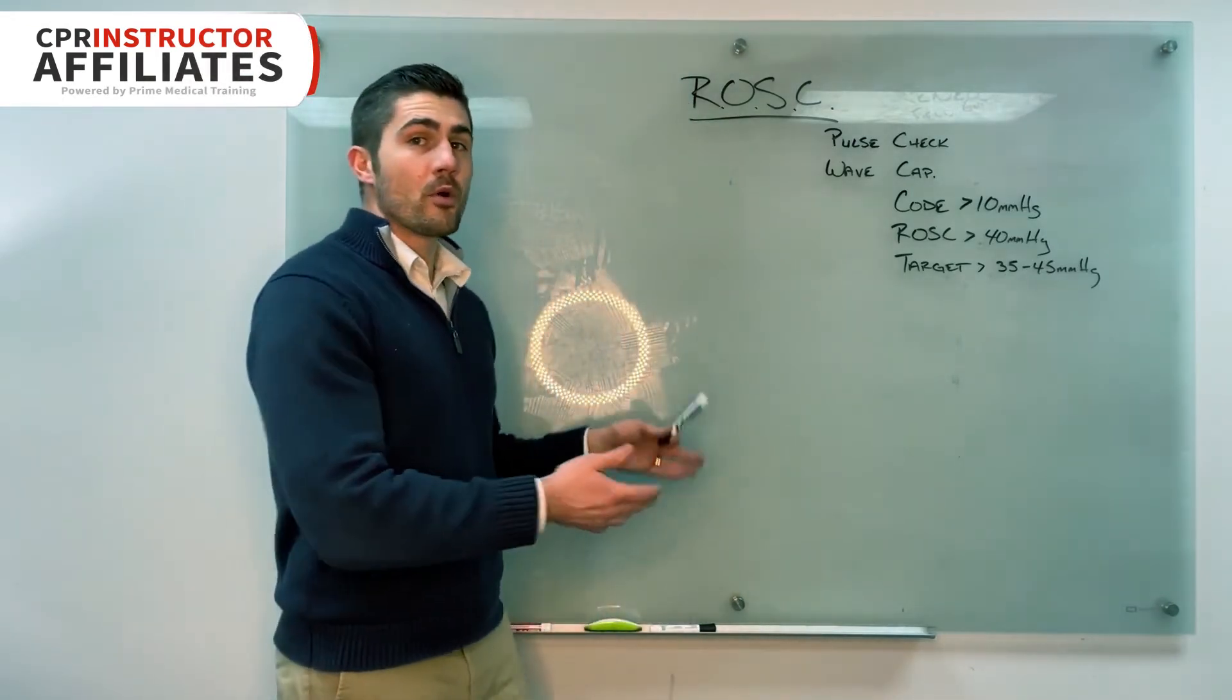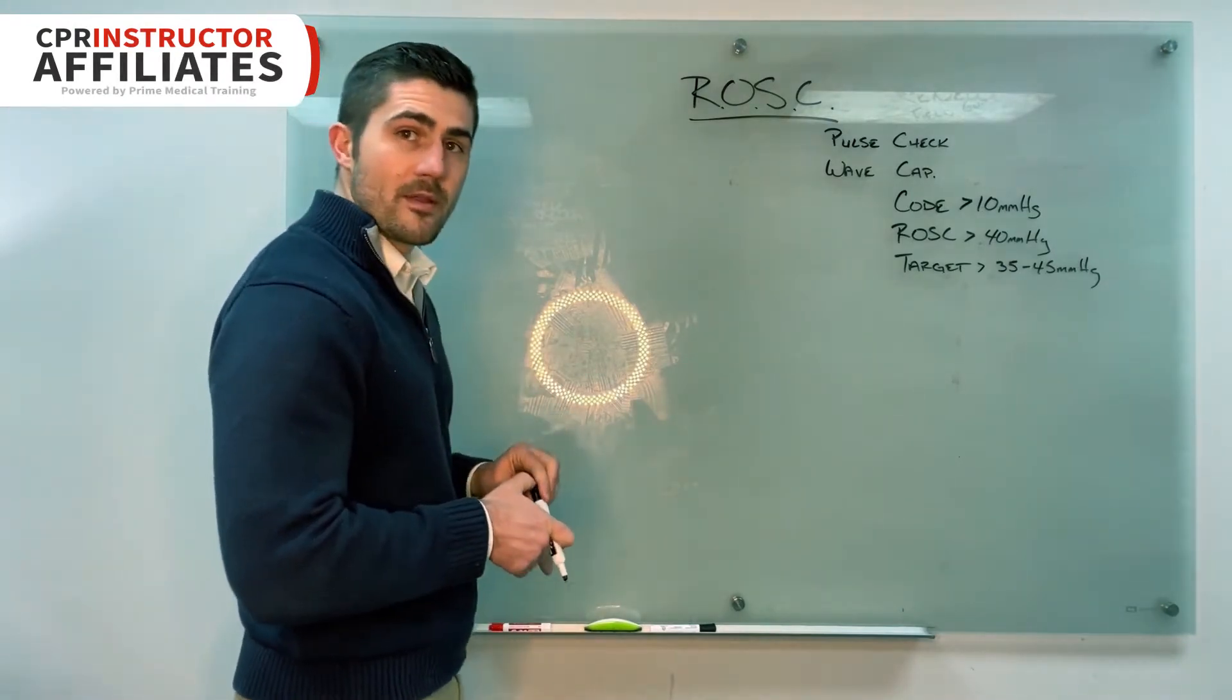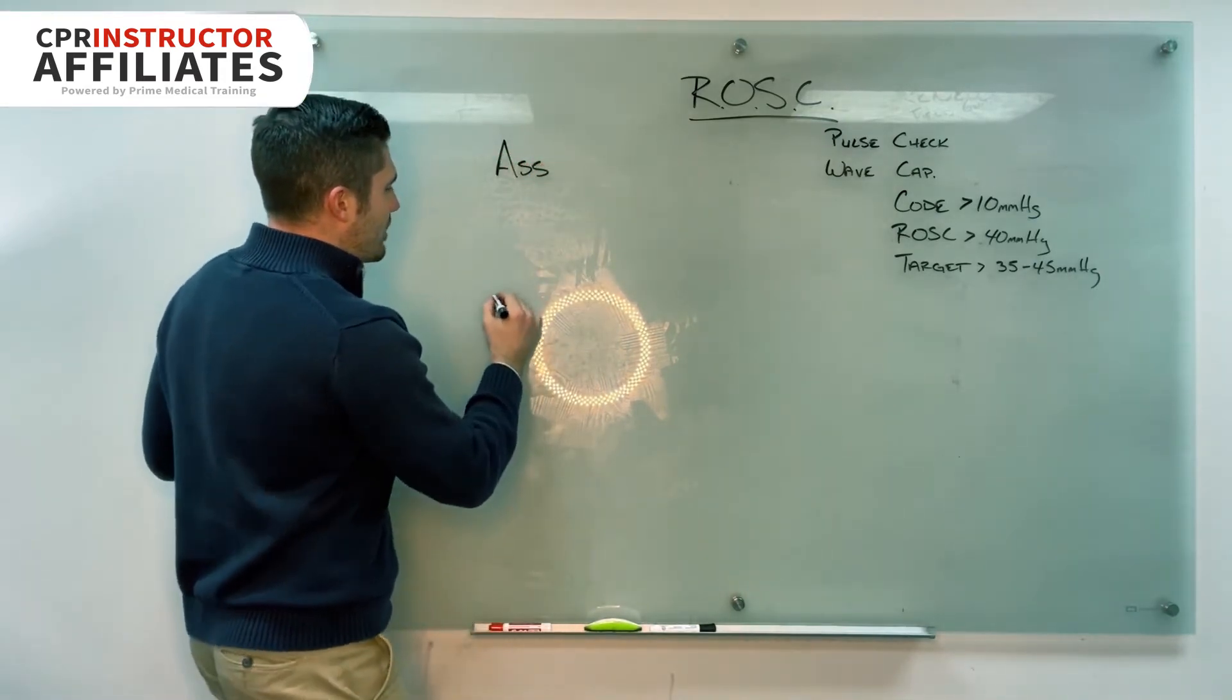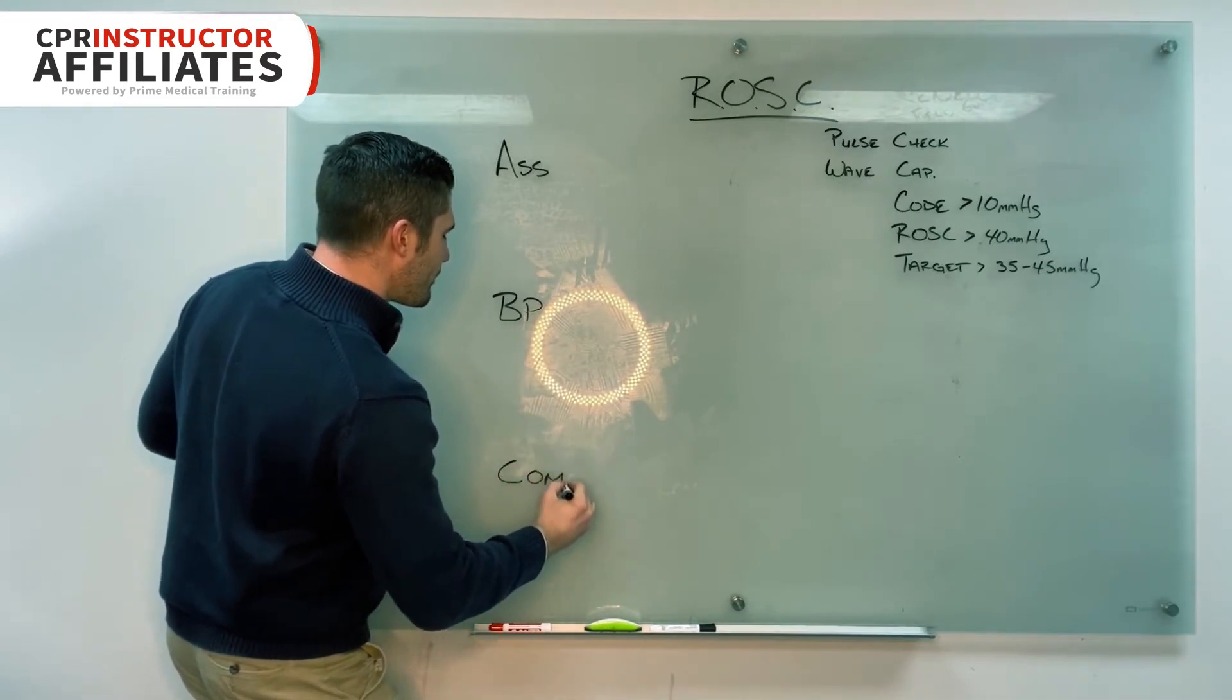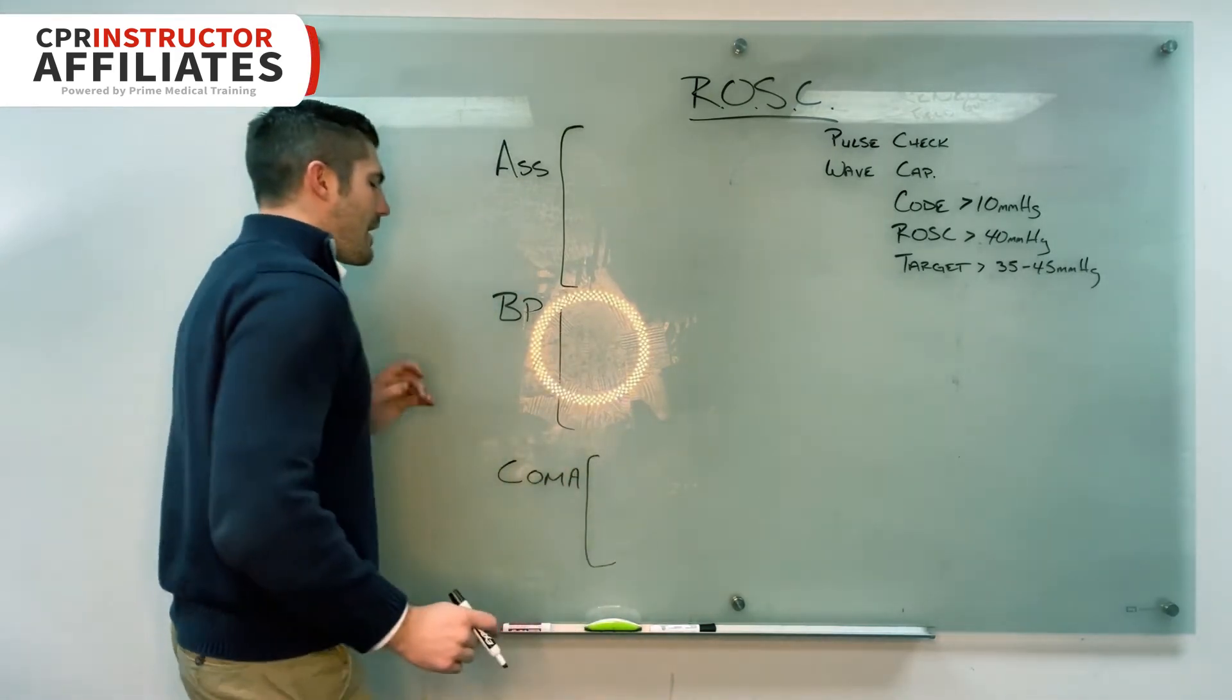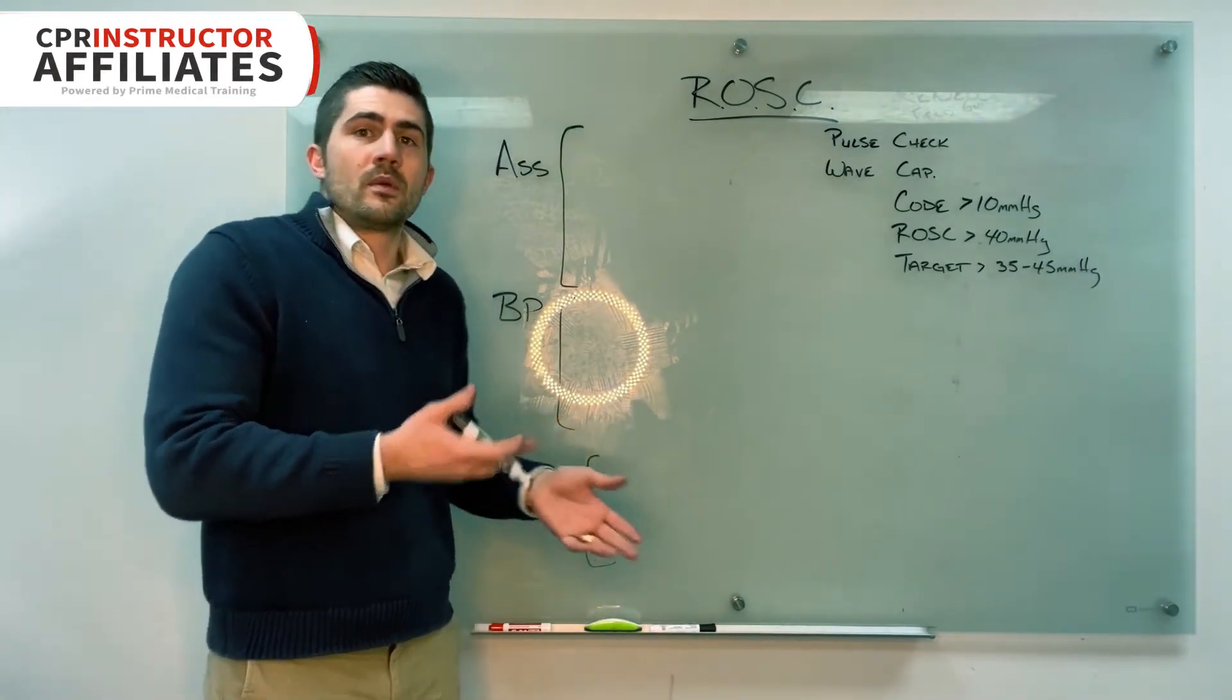But anyway, whichever way you do it, pulse check or waveform capnography, when you verify that you're in ROSC, we have a number of things that need to be done. So first is what I tell them I write up here the assessment. I put here BP for blood pressure, and then down here, I put coma. Then I draw these little brackets. And I say, all right, assessment wise, what should we be putting in orders for when we get ROSC back?